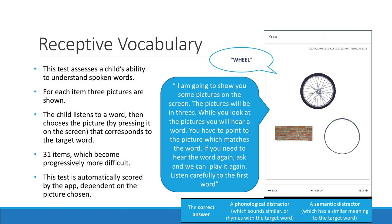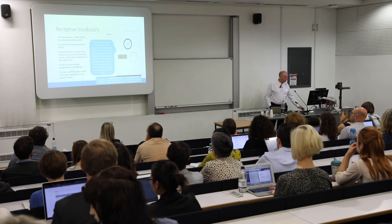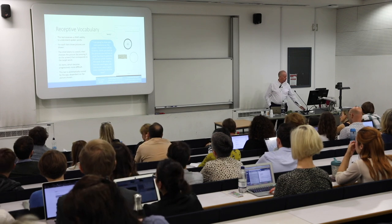The distractors have been selected to include a semantic distractor, which has a similar meaning, and a phonological distractor, which sounds similar to the target item. We use 31 items, and the app automatically records the child's response — reduced to correct or incorrect, but the app actually records which of the three pictures the child has touched.